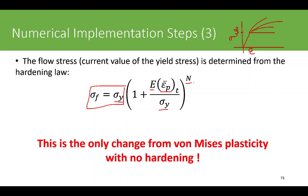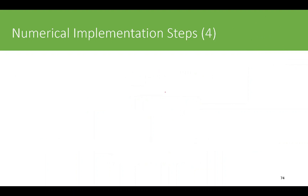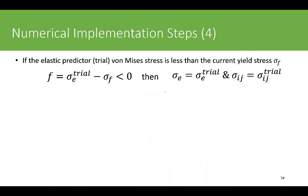This is the only change from von Mises plasticity with no hardening: the flow stress is now a variable that depends on the equivalent accumulated plastic strain in the material.